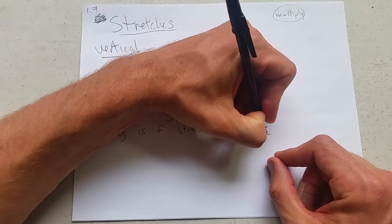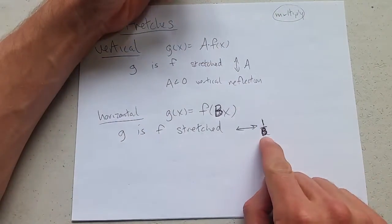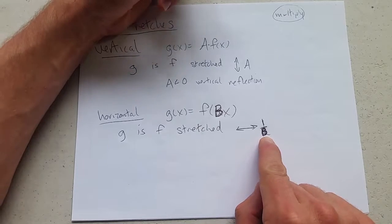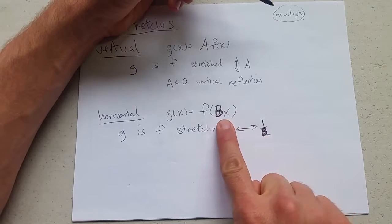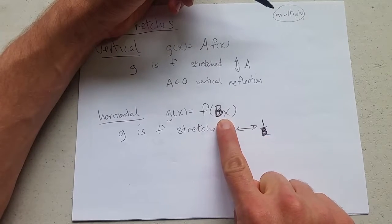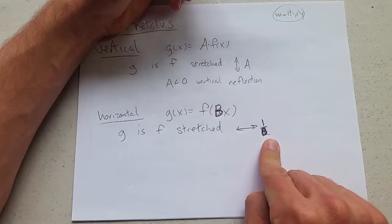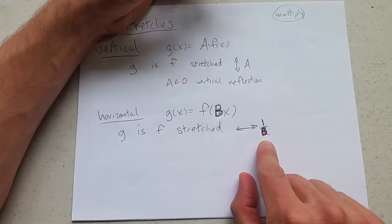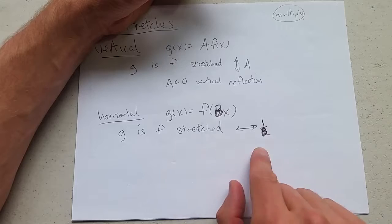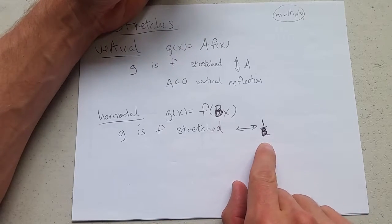Now it looks like you should stretch by b, but it's always the opposite. That doesn't mean negative b. This is multiplication, so the opposite of multiplying by b is either dividing by b or multiplying by the reciprocal of b. This is how the stretch affects horizontal.